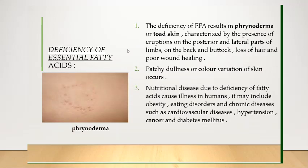What happens in case of deficiency of essential fatty acids? Deficiency of essential fatty acids results in phrynoderma, a toad skin condition characterized by eruptions on the posterior and lateral parts of the limbs, on the back, and the buttocks. These eruptions can be seen in this picture. It also leads to hair loss, poor wound healing, and patchy dullness or color variation of the skin.